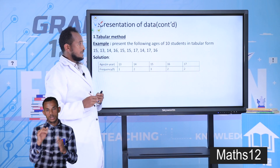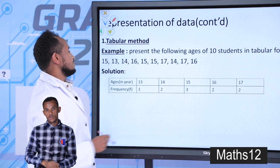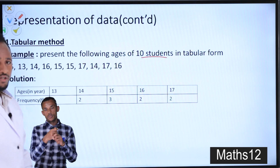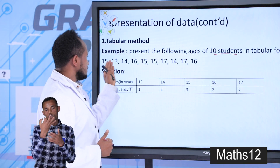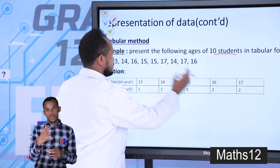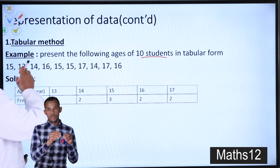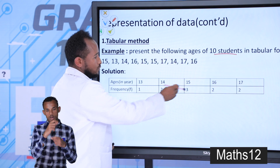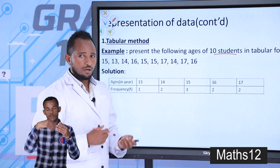The first part is representing given data in tabular form. Let's assume the following ages of 10 students — arrange them starting from the lowest to the biggest. The smallest age is 13, then 14, 15, 16, 17. The number of students whose age is 13 is 1, whose age is 14 is 2, and so on. This is how to represent given data in tabular form.